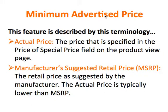This feature is described with the following terminology. The actual price is the price specified in the price or special price field on the product view page. Manufacturer's suggested retail price, which is of course the MSRP, is the retail price as suggested by the manufacturer. The actual price is typically lower than MSRP.